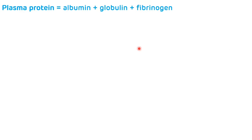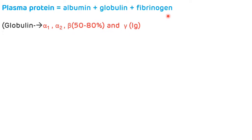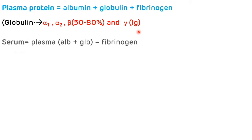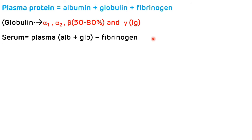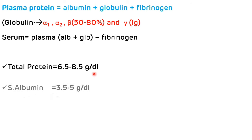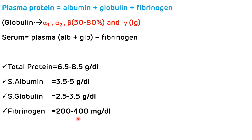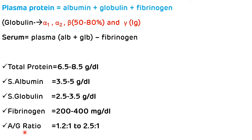Plasma protein consists of albumin, globulin, and fibrinogen. Globulin includes alpha-1 globulin, alpha-2 globulin, beta globulin, and gamma globulin. In serum, the normal concentration of total protein is 6.5 to 8.5 g/dL, albumin is 3.5 to 5 g/dL, globulin is 2.5 to 3.5 g/dL, fibrinogen is 200 to 400 mg/dL, and the normal AG ratio is 1.2:1 to 2.5:1.